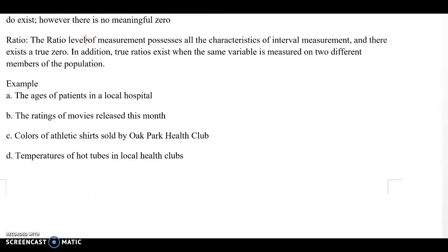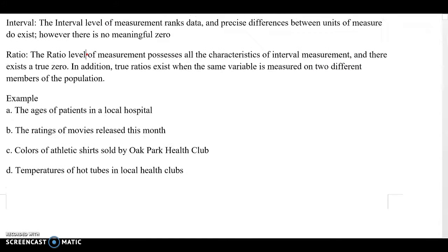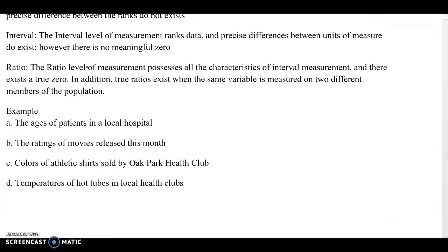Then, look at the examples. A. The ages of patients in a local hospital. As you see, age means a number. Number means quantitative variables. So, there are two different types of quantitative variable which is interval or ratio.